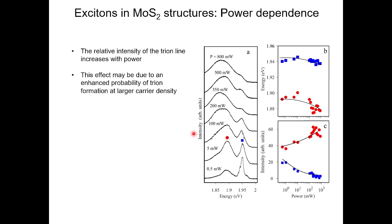This power dependence plot is further evidence for trions. Starting at low powers you see three emission lines, but as you go to higher and higher powers, the probability of trion formation increases. As you shine more and more laser light on the material, you generate more and more carriers, and we believe that creating so many carriers makes trion formation more favorable, though we're not entirely certain of the exact mechanism.